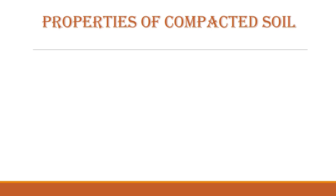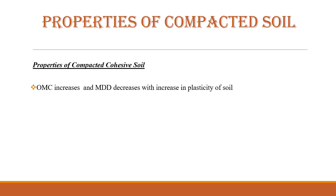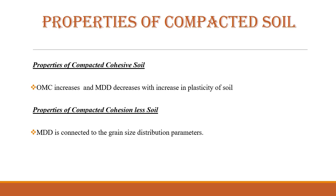Now we are studying the last portion of the fifth module, that is the properties of compacted soil or the effect of compaction on the properties of soil. In case of cohesive soils, the optimum moisture content increases and the maximum dry density decreases with the increase in plasticity of soil. In case of cohesionless soil, that is frictional soil, the maximum dry density is connected to the grain size distribution parameters.